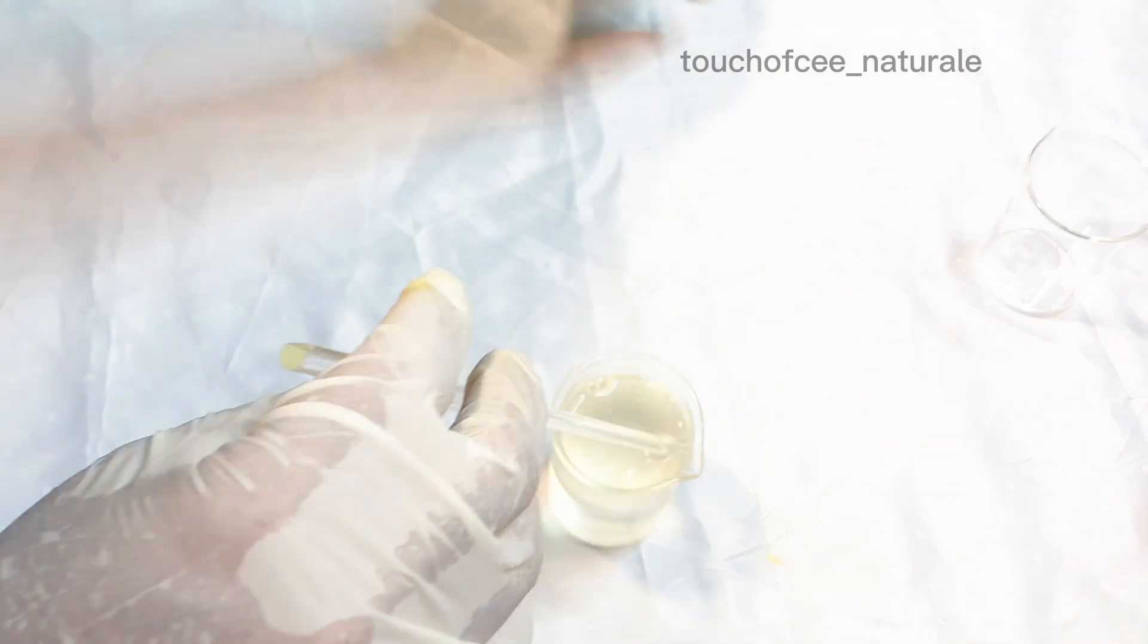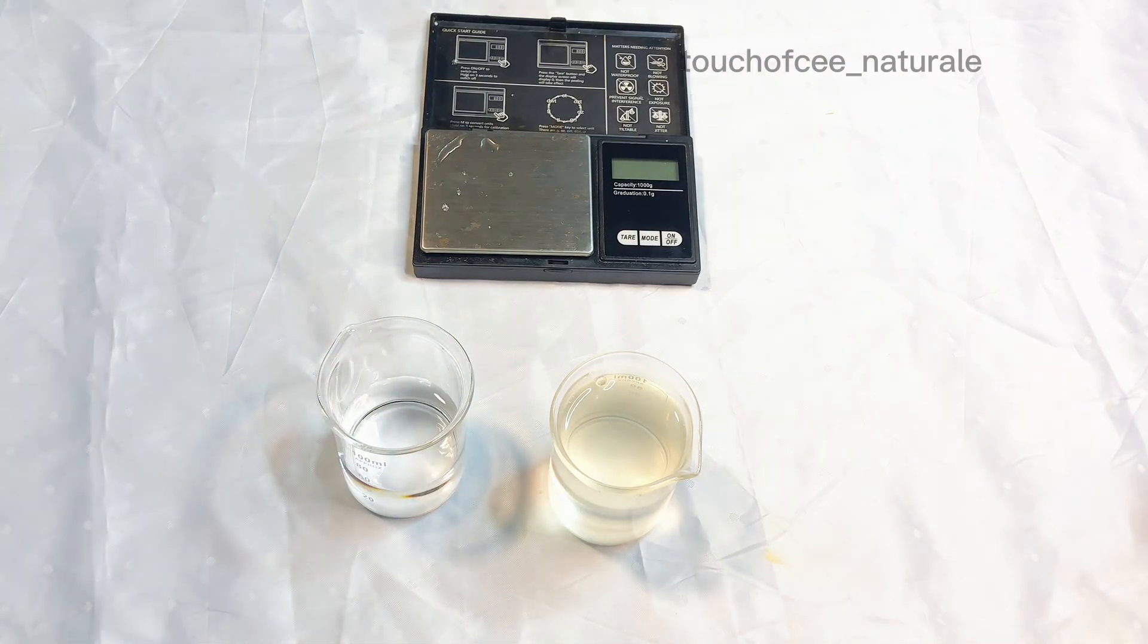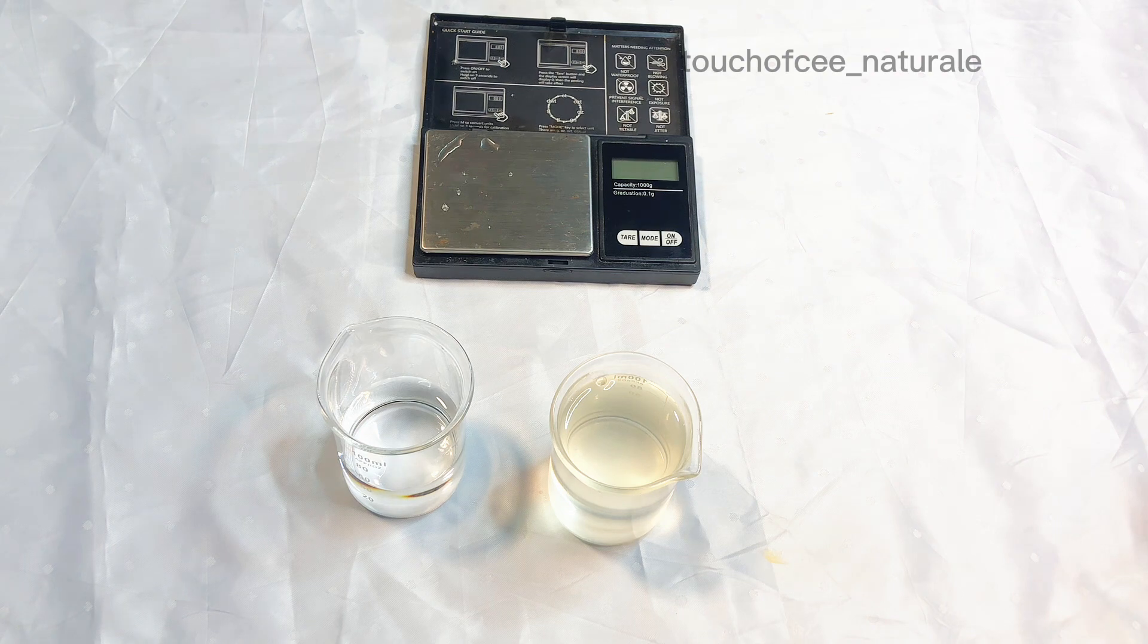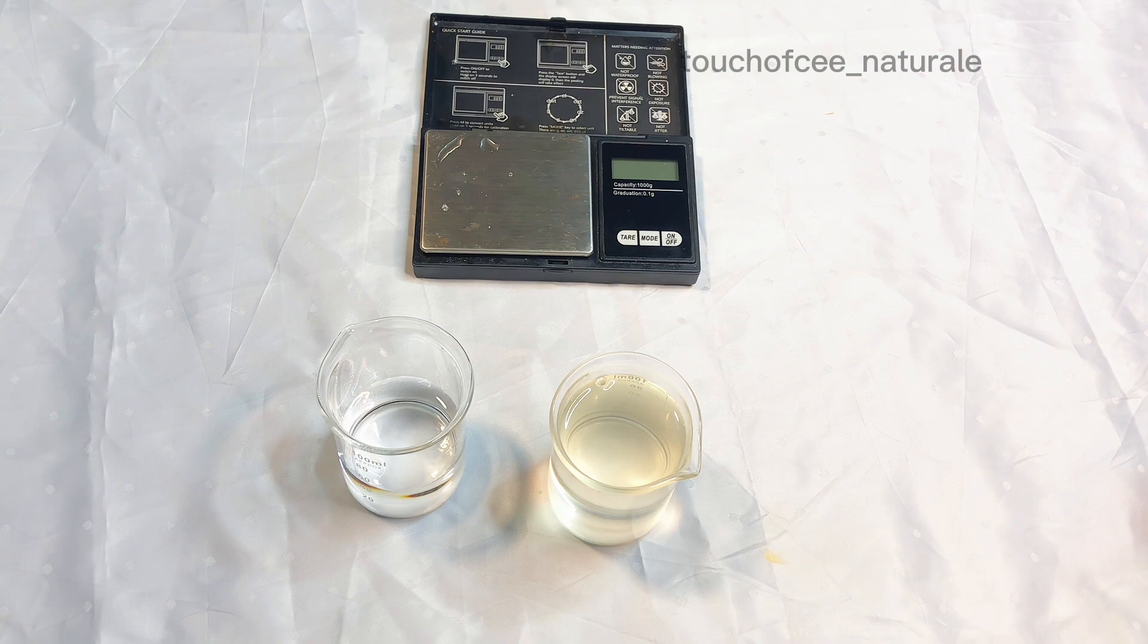I'm just giving it a stir. The next thing I'm going to do is to check my pH to see if I arrived at what I wanted. For this formulation we want to get a pH of 3.5 to 4.5 for the salicylic acid to work properly and give you the desired results.